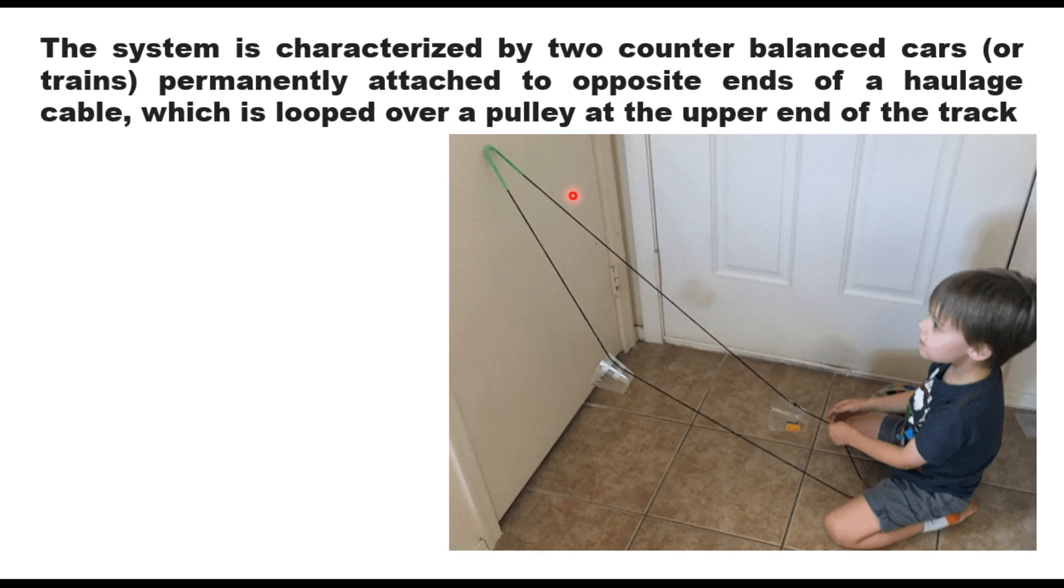Now you can understand this by this figure. This is a pulley here which is placed at the upper end of the track, and here is a car and there is another car here. So when this car goes up, this car will come down, and when this car goes up, this car will come down. That is the basic concept of a funicular railway.